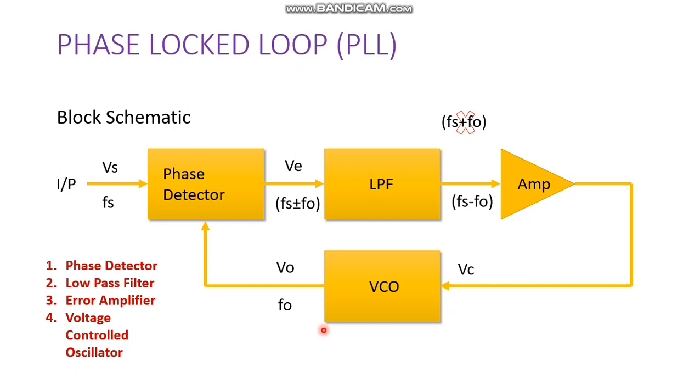except for a finite phase difference phi. This phase difference phi generates a corrective control voltage vc to shift the VCO frequency from fo to fs. PLL tracks the frequency changes of the input signal. Thus PLL goes through three stages: first free running, then capture, and the last is locked or tracking.